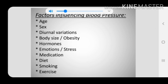Diurnal variations: persons usually have low blood pressure in early morning and it gradually rises, peaking in the evening. Body size or obesity: as body size increases, blood pressure also fluctuates — heavier and taller children have higher blood pressure than smaller children of the same age. Hormones: hormonal alteration also leads to variation in blood pressure. For example, during pregnancy, hormonal changes may cause mild to severe elevation in blood pressure. Emotions and stress: anxiety, fear, pain, and emotional stress may increase blood pressure due to increased heart rate and increased peripheral resistance.